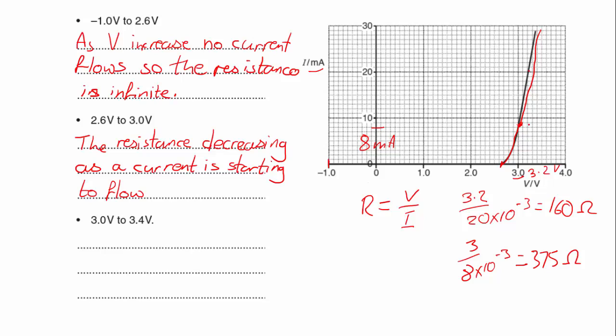So in this region here, even though it's a straight line, because it's not passing through the origin, we would have to say the resistance continues to decrease.